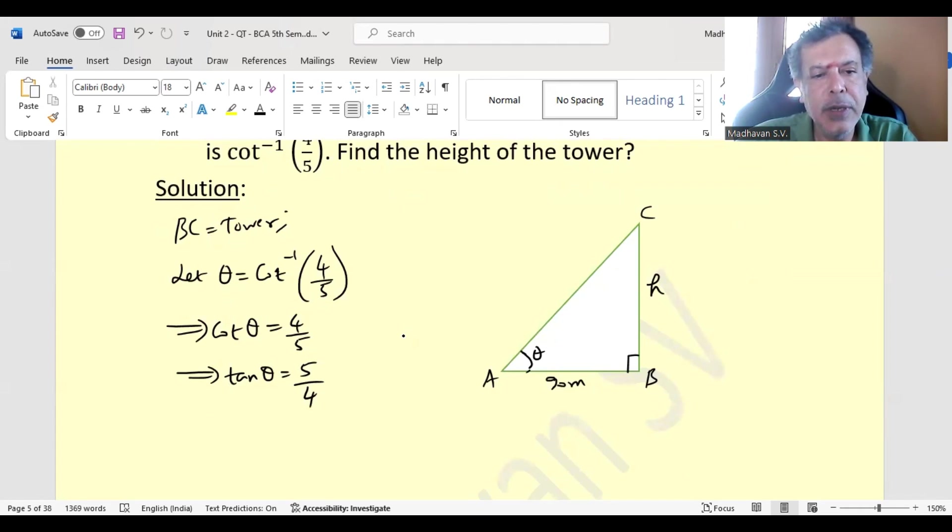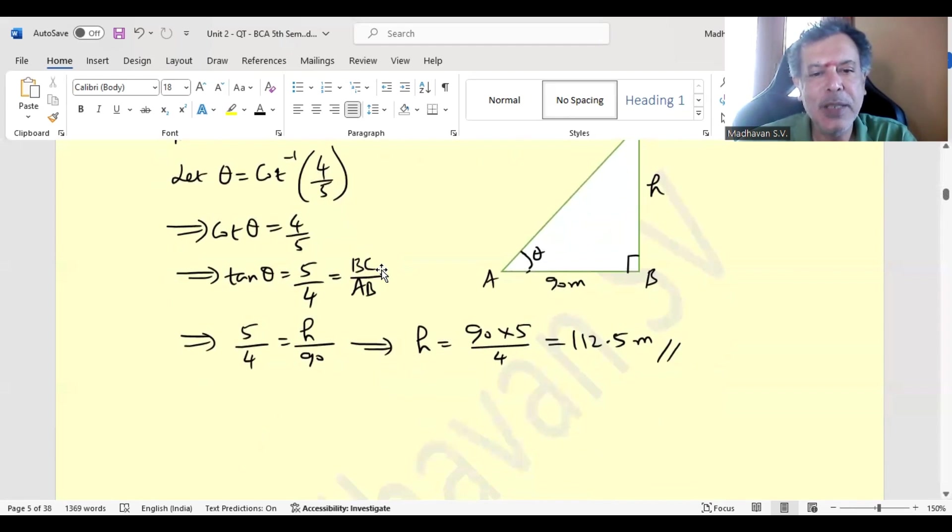Tan theta means opposite BC by adjacent AB. Which means 5 by 4 equals BC is h and AB is 90. So cross multiplying, we will get h as 90 into 5 by 4. So if we calculate that, we will get 112.5 meter. That will be the solution for this particular problem.